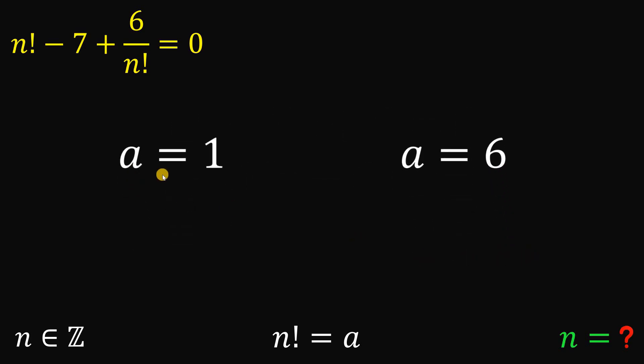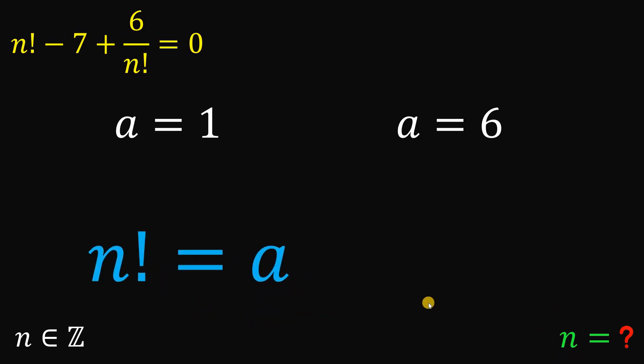So we found two possible values for a: a equals 1 or a equals 6. But we don't care about the value of a. We want the value of n. Now we know n factorial simply equals a. So we can replace this a with n factorial.